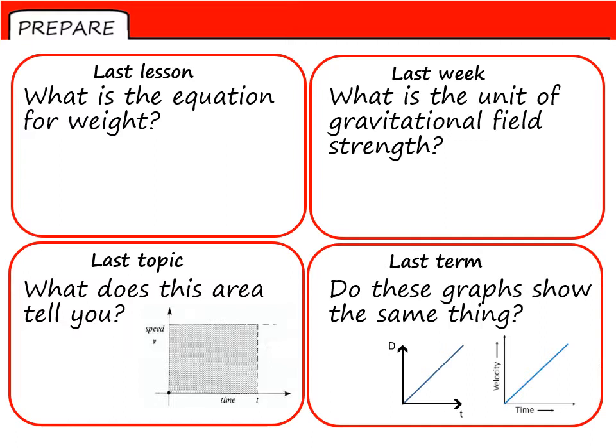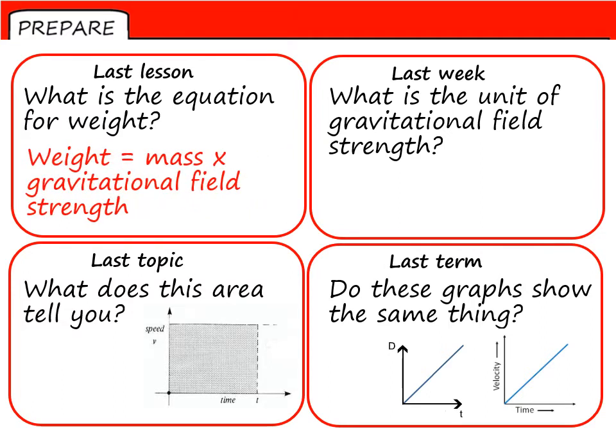So grab your green pens, let's check together. Question number one, the weight equation is mass times gravitational field strength, or as formula, small w equals small m times small g, w equals mg. The unit of gravitational field strength is the newton per kilogram.